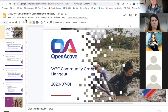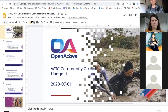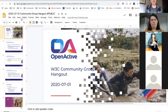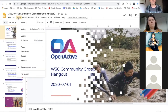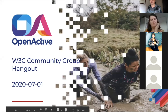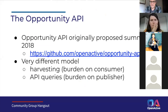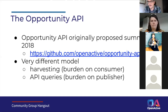The topic for today's call is reviving a piece of work that was left dormant in about 2018. Back in 2018, Nick and Lee started developing together the Opportunity API — a specification for an API that would allow people to query for particular bits of data, rather than using the RPDE harvesting method, which is currently the only way to really publish opportunity data.